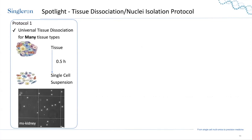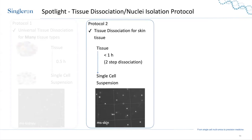I want to share a few spotlights on our protocols for tissue dissociation and cell isolation. Protocol one is a universal tissue dissociation for many tissue types. Using our tissue dissociation buffer, the process takes 15 minutes to one hour to go from intact tissue to single cell suspension. For example, a microscopic image of mouse kidney tissue shows a well-separated and singulated single cell suspension after just 15 minutes of dissociation.